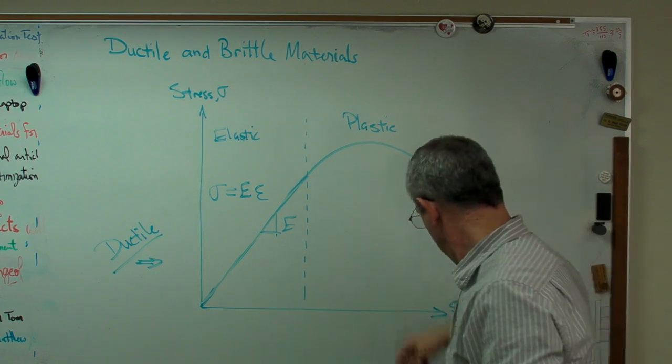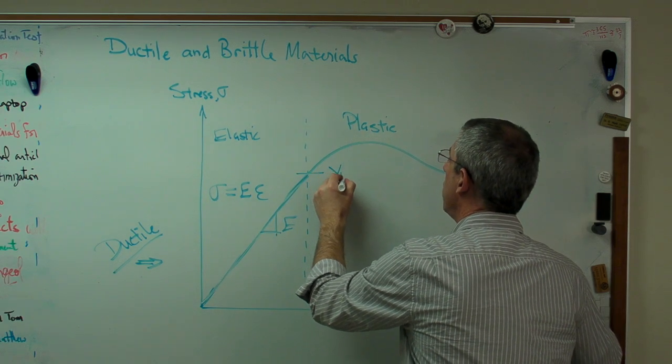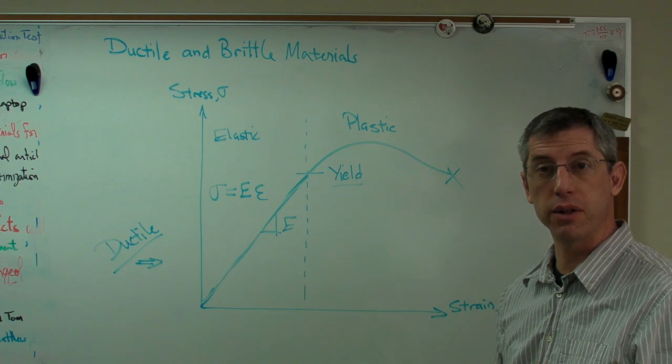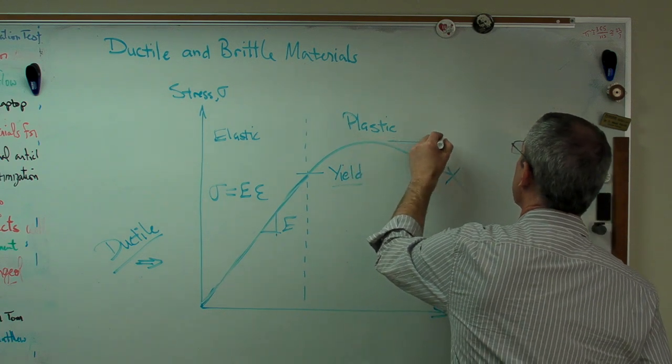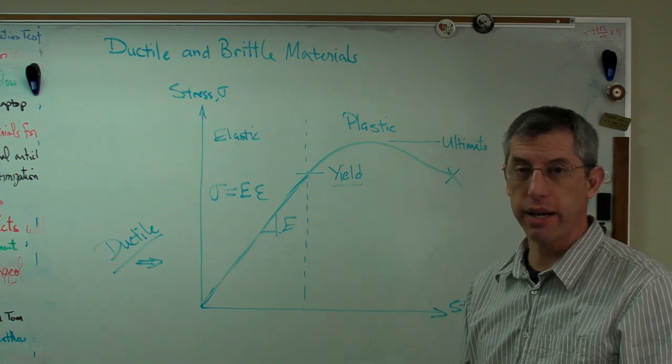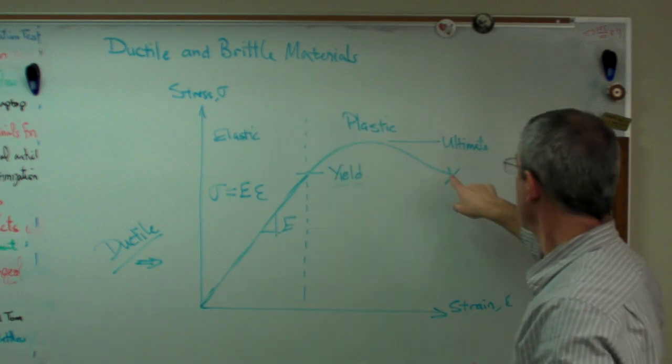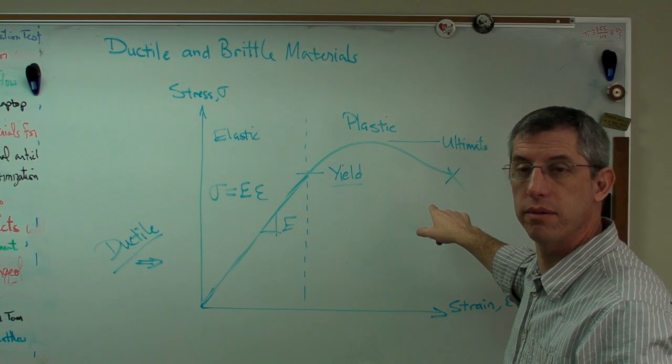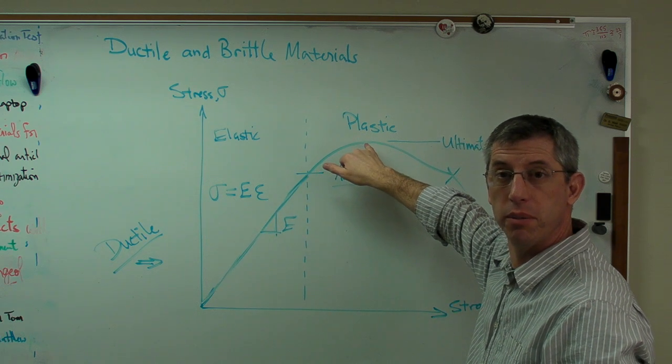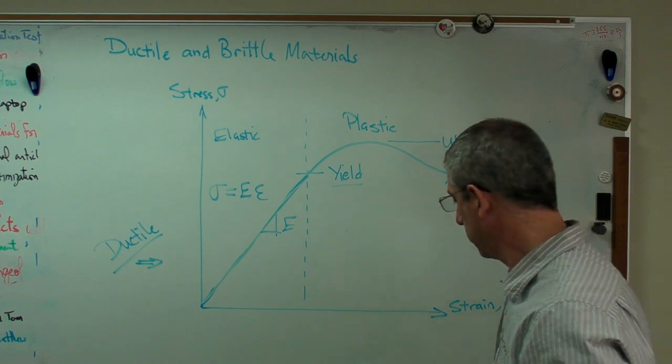The transition between straight line and this curve line is called yield. That's the point at which the material is now going to start permanently deforming as the load increases. The ultimate here, this is called ultimate. This is called rupture. This is when it actually breaks into two pieces. So elastic deformation, there's yield when you make the transition into plastic deformation, ultimate is well into the plastic region, and then there's rupture.